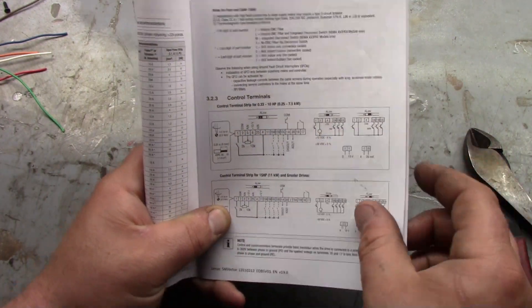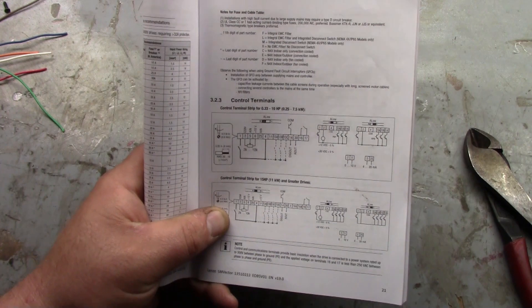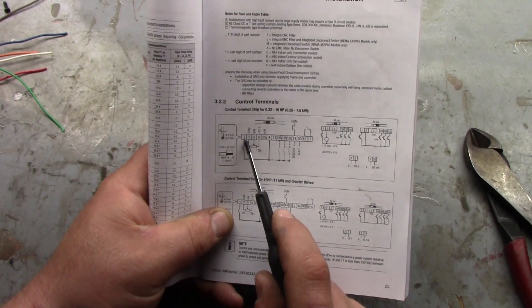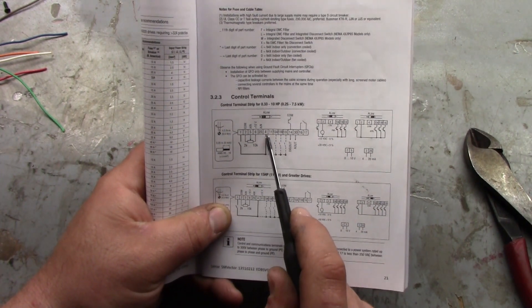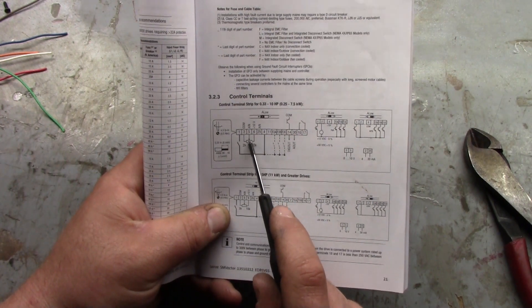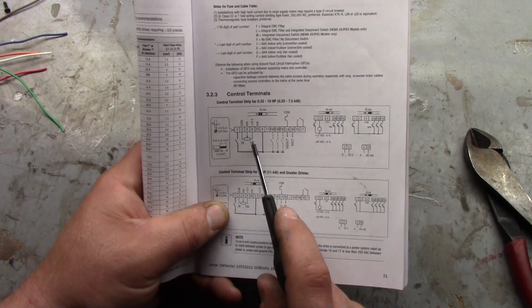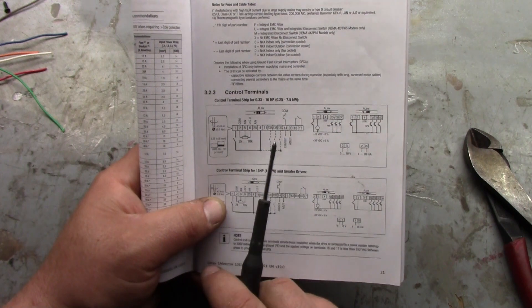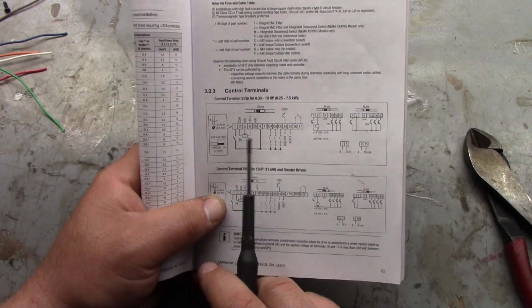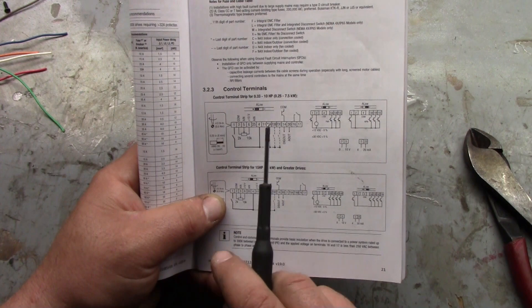This is my terminal block in the VFD. One is going to go to a switch and go to four. Two, five, and six are going to go to a 10k linear potentiometer. It's important that it's linear and not an audio potentiometer or variable, you want linear.